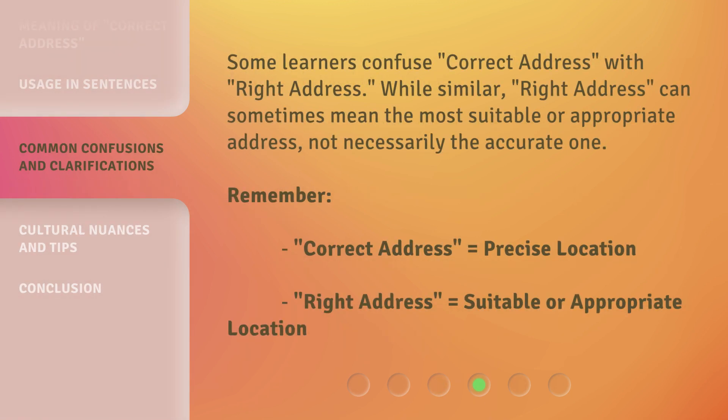Some learners confuse correct address with right address. While similar, right address can sometimes mean the most suitable or appropriate address, not necessarily the accurate one. Remember: correct address equals precise location, while right address equals suitable or appropriate location.